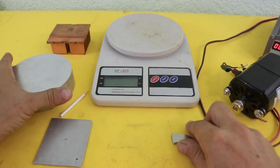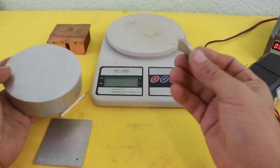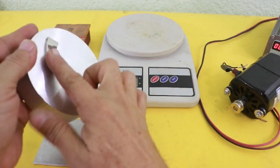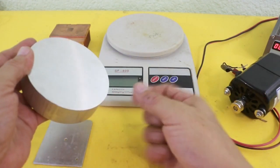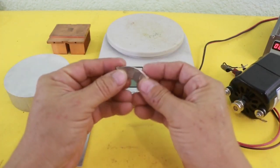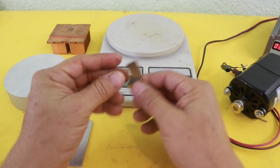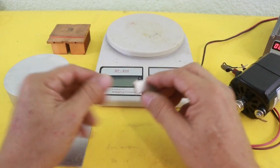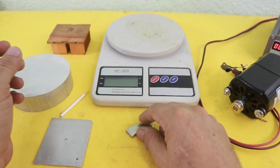Maybe you have seen the experiment when you have a magnet and it falls slowly when it is placed on a piece of copper or aluminum, or also when you put the magnet inside a copper tube and it falls very slowly. This is due to Lenz's law.